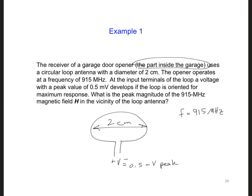Now we're asking, what is the peak magnitude of the 915 megahertz magnetic field H in the vicinity of the loop antenna?